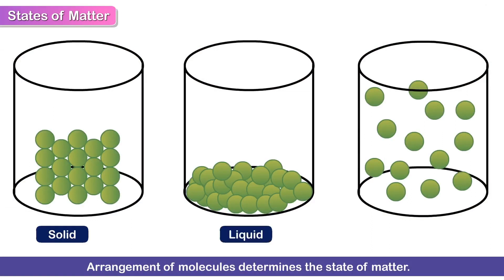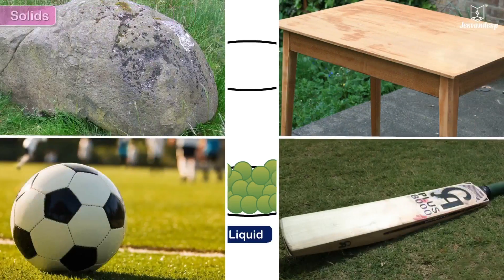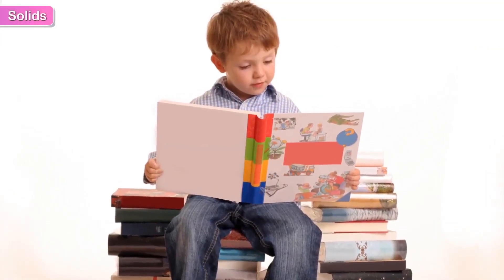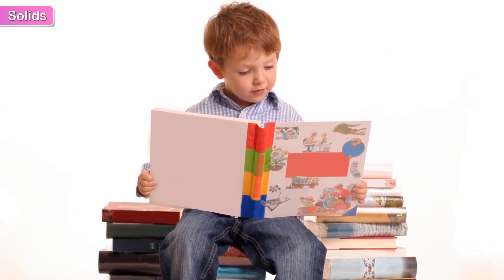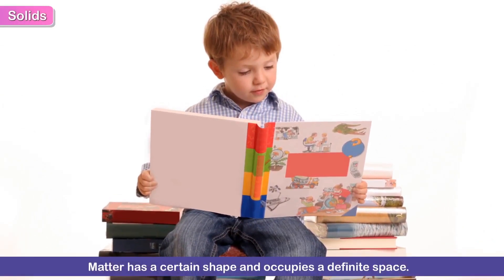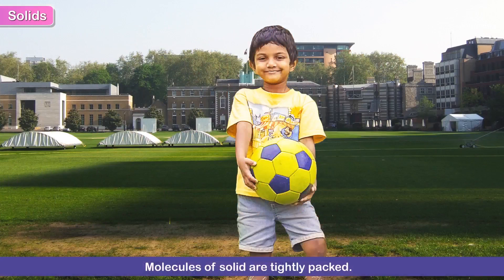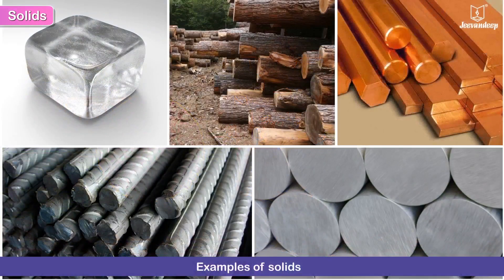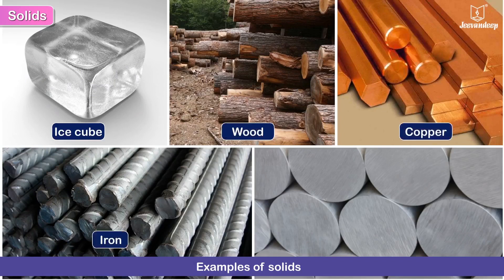Their arrangement determines the state of the matter — solid, liquid, or gas. Solids. Hold your book in your hands and feel its hardness. It also has a certain shape and it occupies a definite space. In solids, the molecules are tightly packed. Examples of solids would be an ice cube, wood, and metals such as copper, iron, and aluminium.